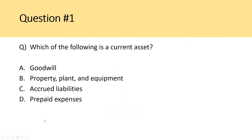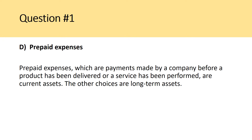Question number one: which of the following is a current asset? A, goodwill; B, property, plant, and equipment; C, accrued liabilities; or D, prepaid expenses? Prepaid expenses would be the current asset. Accrued liabilities is a current liability, property, plant, and equipment is a long-term asset, and goodwill falls under equity. So D is the answer — prepaid expenses, which are payments made by a company before a product has been delivered or a service has been performed, are current assets.